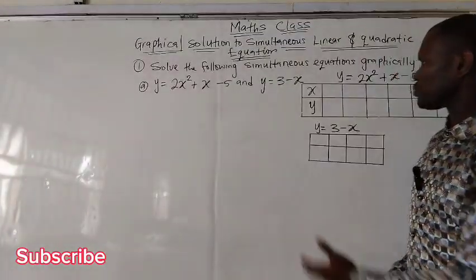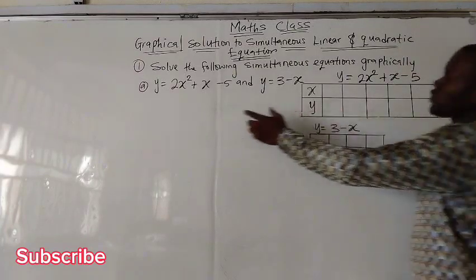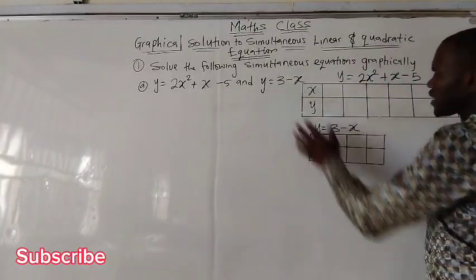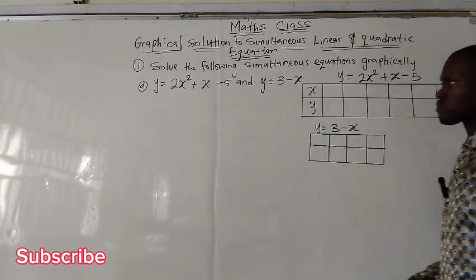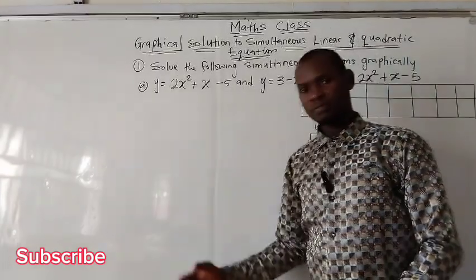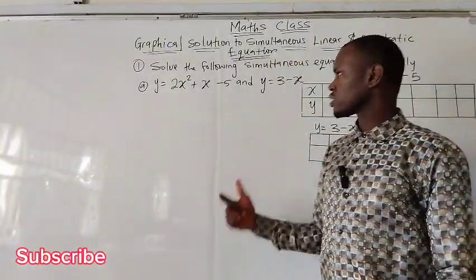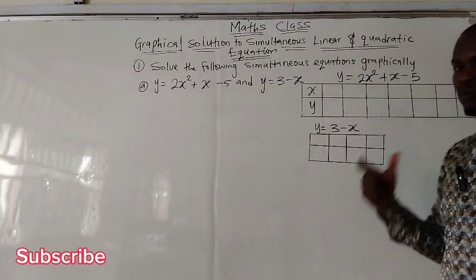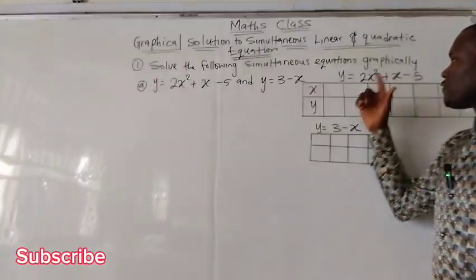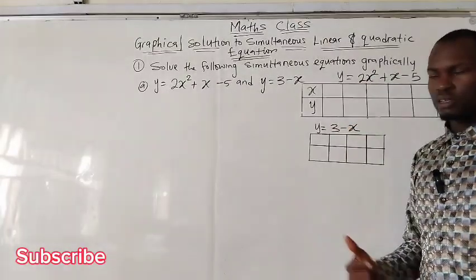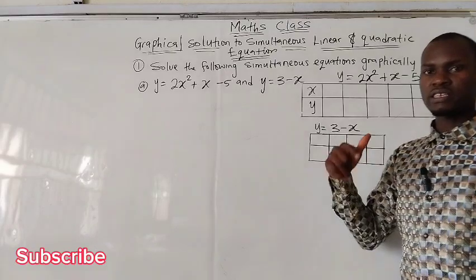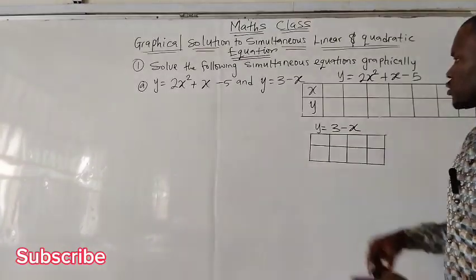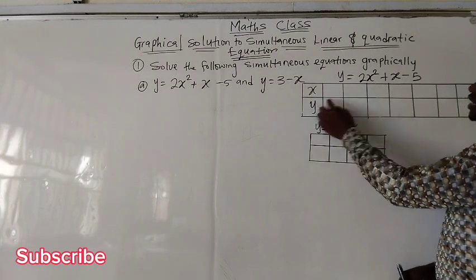The first thing we are going to do is to prepare a table for the first equation, the quadratic, and prepare a table for the linear equation. You are going to choose values for x, substitute into the quadratic equation, and get corresponding values for y. Sometimes the values of x are given to you. In the next question, we'll solve cases where x values are already given.